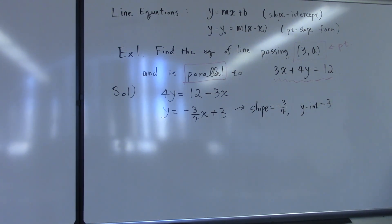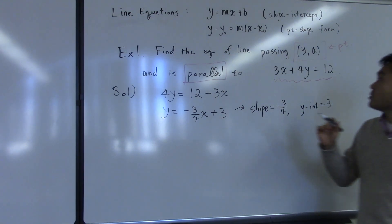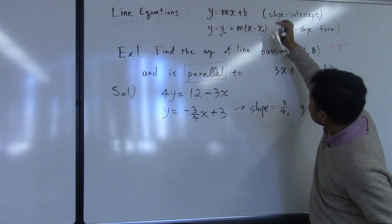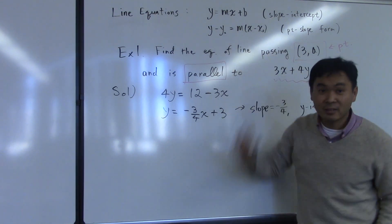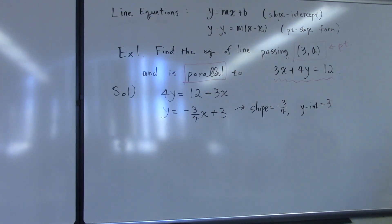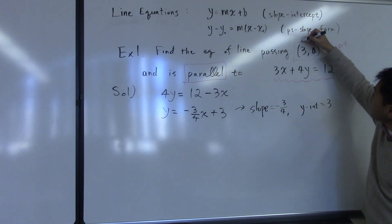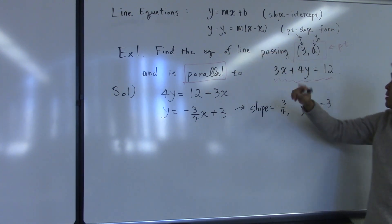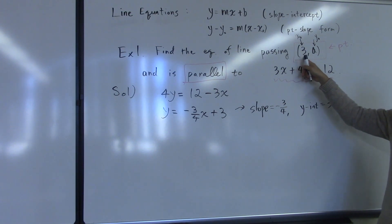How do you use the point-slope form? First, what is this thing x naught and y naught? x naught, y naught is the point that the line passes through. So that corresponds to 3 and a. 3 is x naught and a is y naught. We're going to use this formula with x naught equals 3 and y naught equals a.